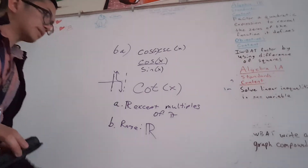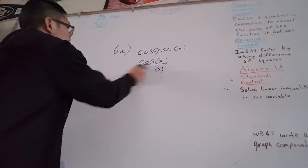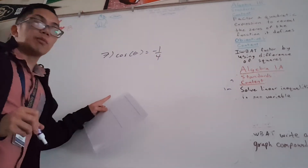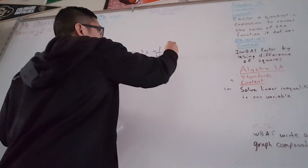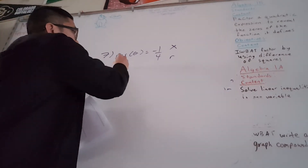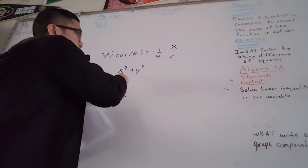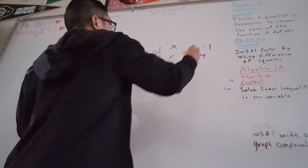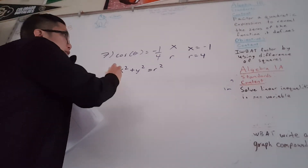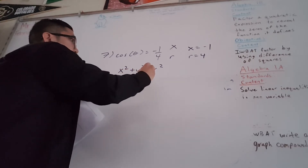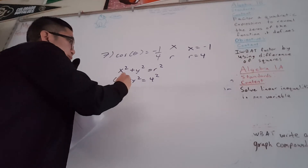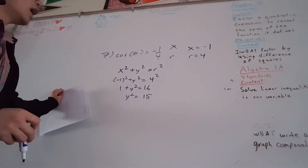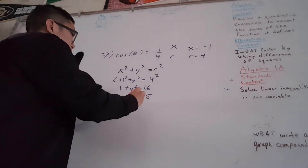Now let's do number seven. They say cosine theta is equal to negative one-fourth. Remember, cosine — we treat this as x over r. So x is negative 1 and r is equal to 4. To find y, remember the equation of a circle centered at the origin: x squared plus y squared equals r squared. So negative 1 squared plus y squared equals 4 squared, giving 1 plus y squared equals 16. Subtract 1 and y squared equals 15, so y is equal to plus or minus root 15.